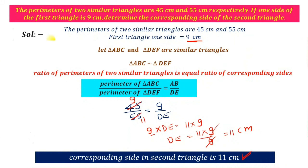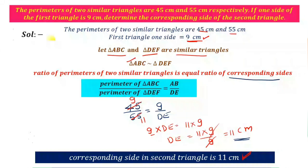Write down: perimeters of two similar triangles are 45 cm and 55 cm. First triangle one side is 9 cm. Let triangle ABC and triangle DEF be similar triangles. Ratio of perimeters equals ratio of corresponding sides: 45 by 55 equals 9 by DE. Cross multiply: 9 into DE equals 11 into 9, so DE equals 11 cm. Therefore, the corresponding side in the second triangle is 11 cm.